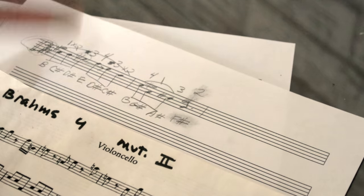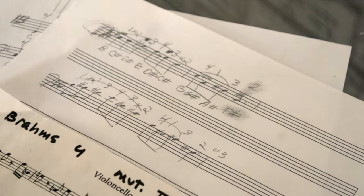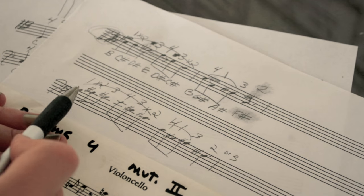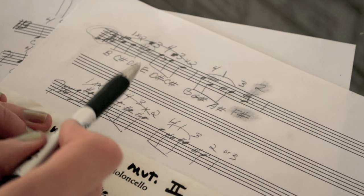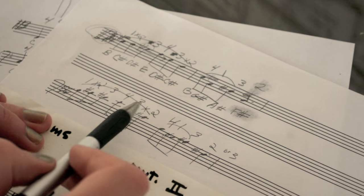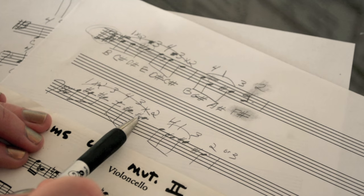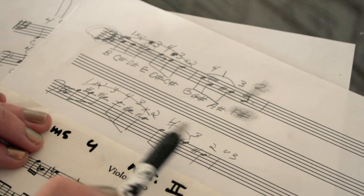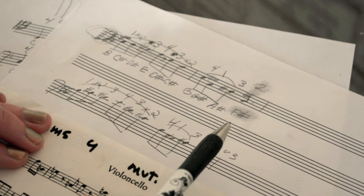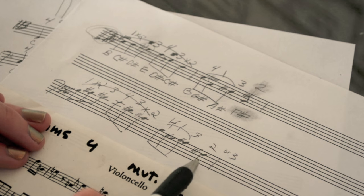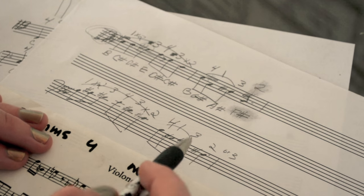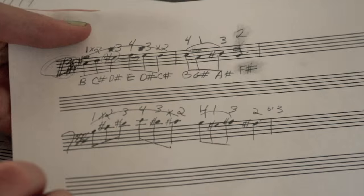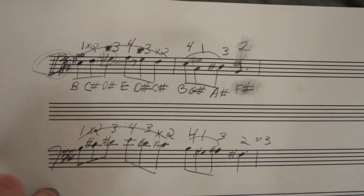And then, here is the bass clef equivalent. So B, finger 1, extend 2, C sharp, D sharp, finger 3, 4 on E, D sharp, finger 3, C sharp, F sharp, yeah, extend finger 2, 4, B, G sharp, G sharp, A sharp, A sharp, 4, 1, 3, F sharp, finger 2. Or, you could do finger 3, it really doesn't matter. I think I had finger 2 written in just for the sake of vibrato. I feel like you get a better vibrato sound with that. So let me go ahead and show you this up close, so that way you can pause the screen on this and really understand.